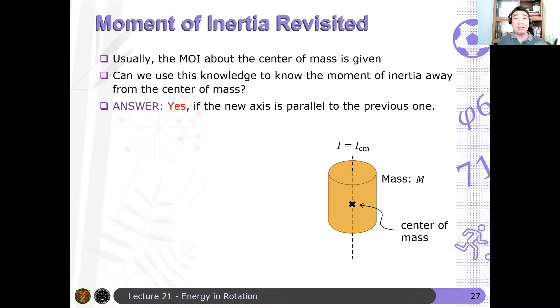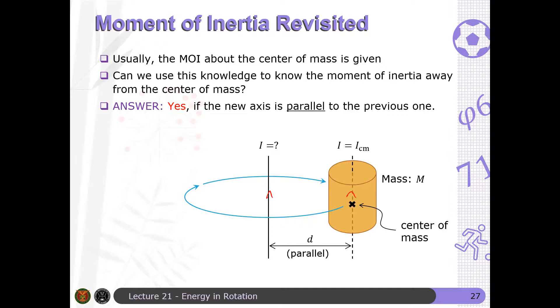The answer is yes, assuming that it is parallel to the previous one. So for example, if I have I here, and we want to determine the moment of inertia about this axis here - at dito nag-rotate yung object - then I can determine that moment of inertia with the assumption that this one and this one are parallel to each other. Questions so far?